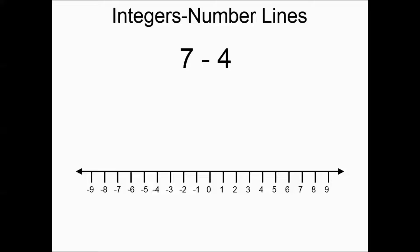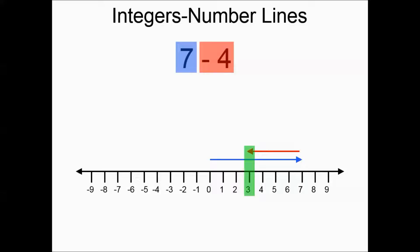Seven minus four — would these arrows be going in the same or different directions? You're actually going to subtract these values. Let's do the visual: right seven, then left four, so you'd end up at three. Seven had the larger absolute value, so it's a positive number and the answer is positive.